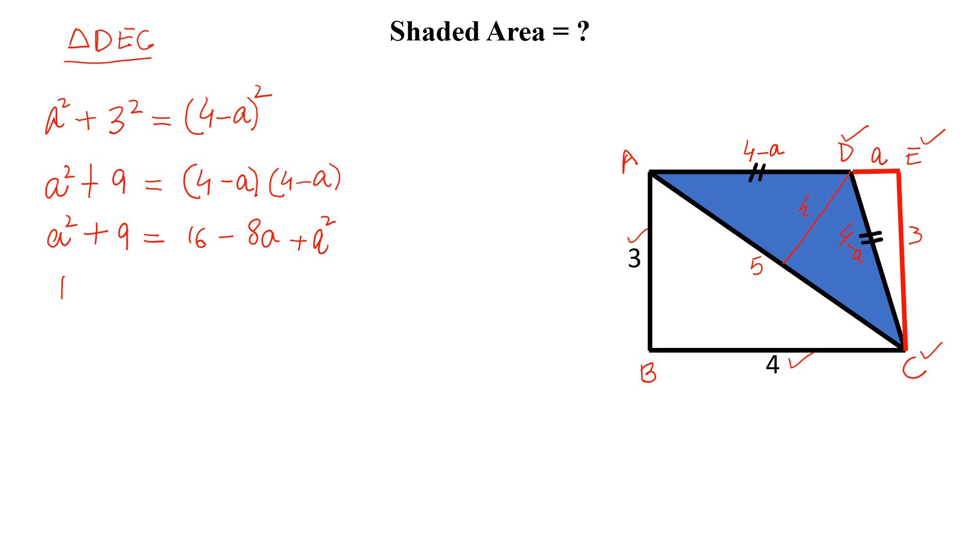Simplify more and we can write 16 minus 8A is equal to 9 and this implies 8A is equal to 7. So A is equal to 7 by 8.